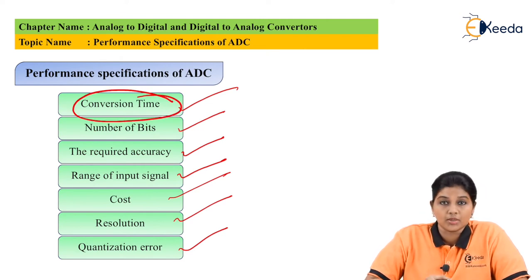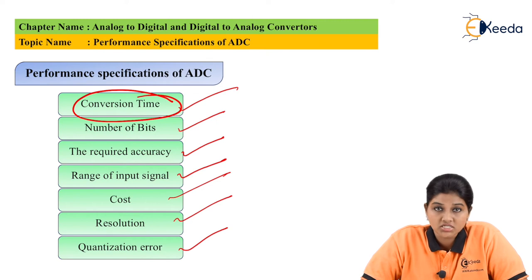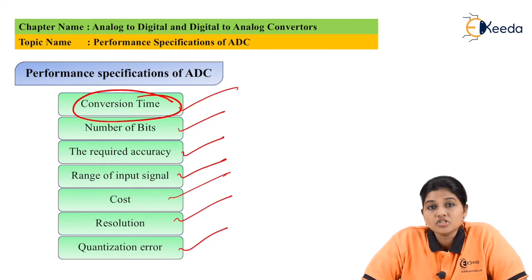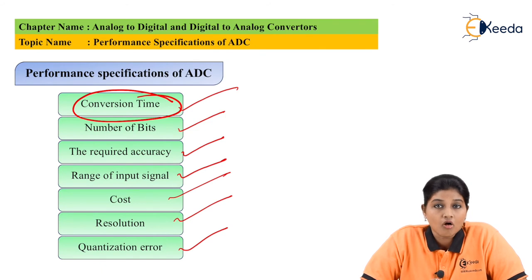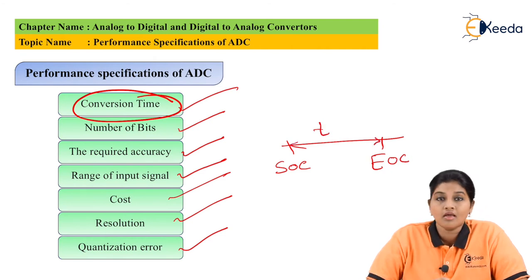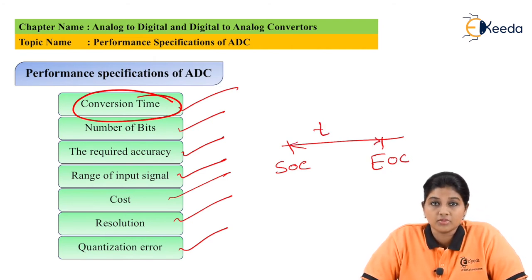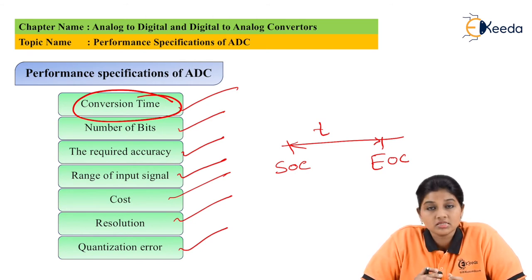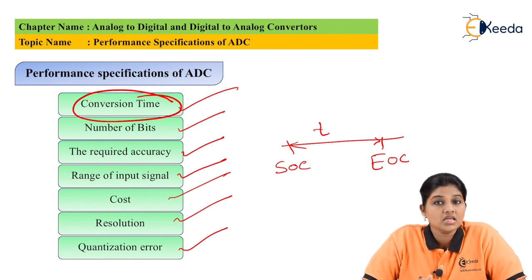The first parameter is conversion time. The block diagram of ADC consists of two signals: SOC and EOC. Conversion time is basically the time required for conversion of an analog signal into a digital signal — or the time required between SOC and EOC. Ideally it should be zero, but practically it should be as small as possible, because conversion time decides the speed of operation of the ADC. If conversion time is less, the ADC can convert signals very fast, indicating high speed.